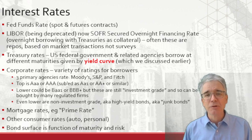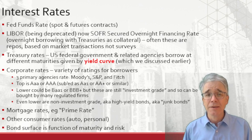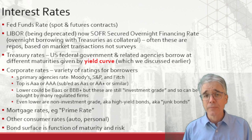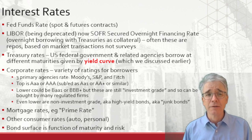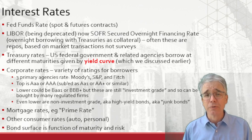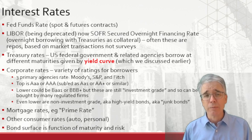Another interest rate that used to be common is LIBOR. That's now being deprecated, and instead banks use SOFR — Secured Overnight Financing Rate. That is overnight borrowing with treasuries and bonds as collateral. These are often repos.